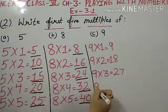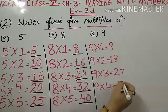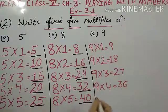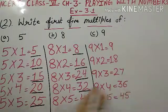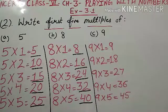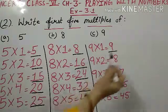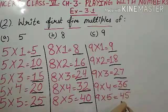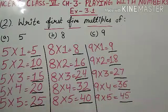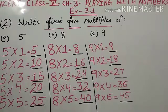9 multiplied by 4, 36. 9 multiplied by 5, 45. So, these are the first 5 multiples of 9. The 9 multiples are 9, 18, 27, 36 and 45. So, this is how you find the first 5 multiples.